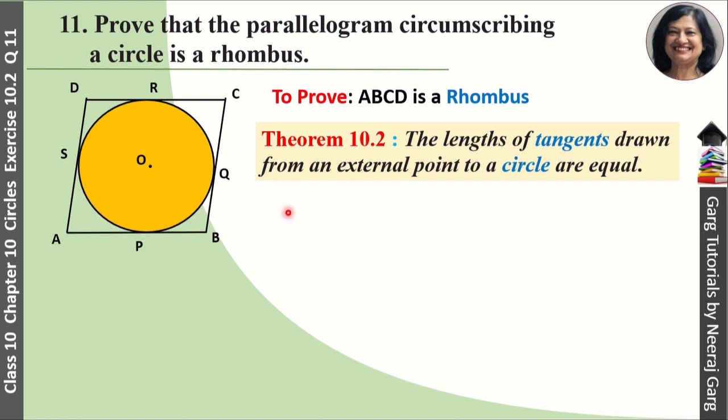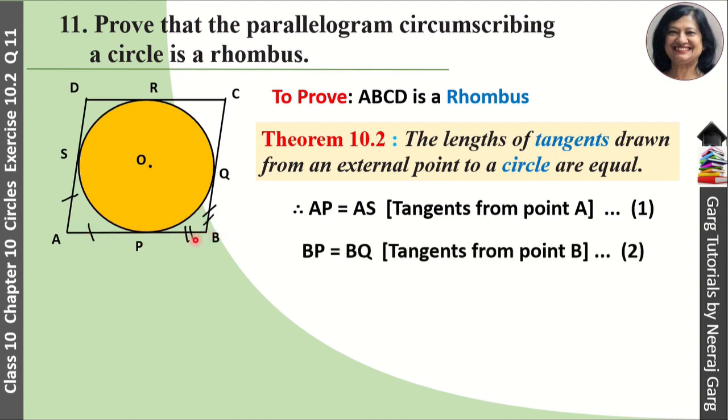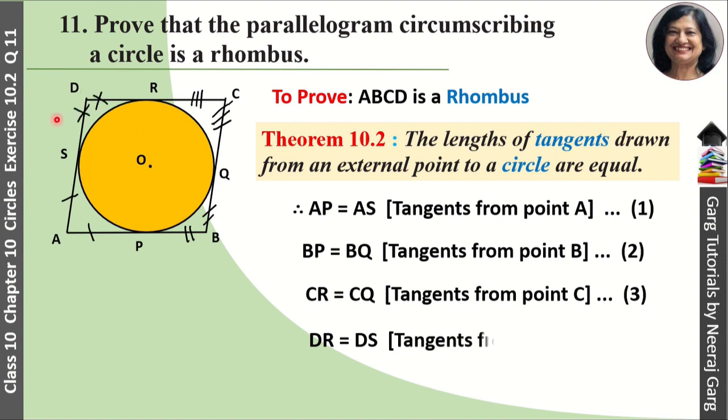From point A, we have two tangents AB and AS, so they are equal. From point B, we have BP and BQ, so they are equal. From point C, we have tangents CQ and CR, so they are equal. And from point D, we have tangents DS and DR, so they are equal. So we have these four equations: AP=AS (1), BP=BQ (2), CR=CQ (3), DR=DS (4).